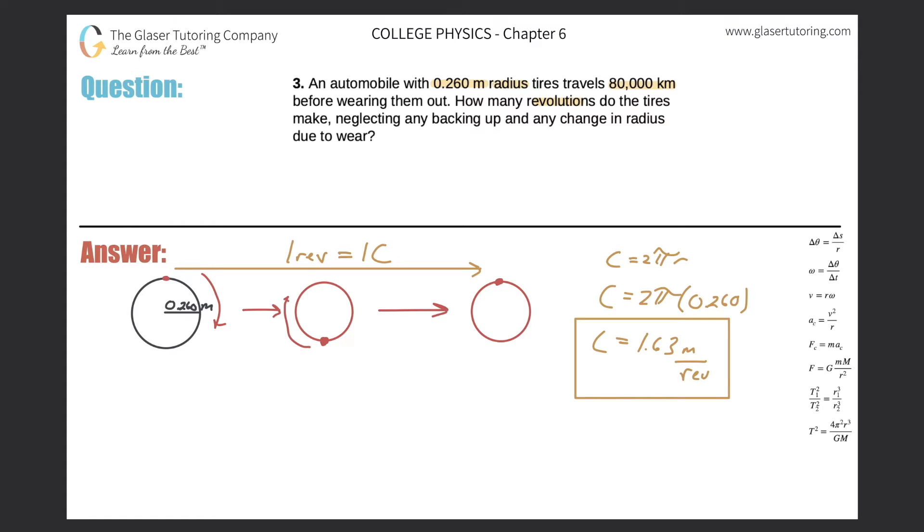Now, the car travels 80,000 kilometers. But I'm already noticing they gave me a value in meter, I just calculated my answer in meter, and this is in kilometers. So already, I'm realizing I got to convert something, either convert this to kilometers or convert this to meters, it doesn't matter. I'm just going to convert this value to meters.